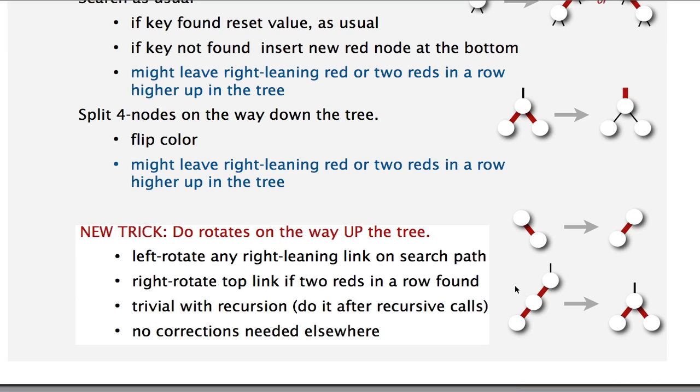So we go down the tree. We break any 4-nodes. And if we don't have the elements we want, we add it. And then, when we go back up the path that we went down in, we do rotations to fix the configurations that are illegitimate. And it turns out we don't need to do any other locations. These problems don't percolate to other places in the tree.